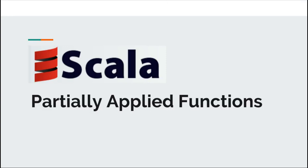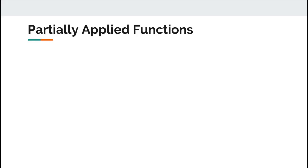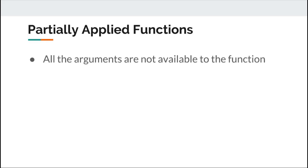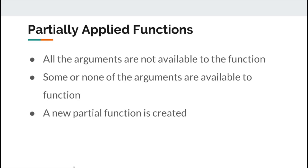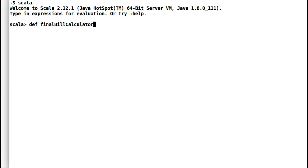Hi and welcome back to functional Scala. Today we will cover partially applied functions in Scala. Like many other functional languages, Scala allows you to apply a function partially. This means that when applying the function, you do not have to pass values for all parameters defined by the function, but you pass values only for some of the parameters, leaving the remaining ones blank. What you get back is a new function whose parameter list only contains parameters from the original function that were left blank. I will provide a couple of examples to explain the concept.